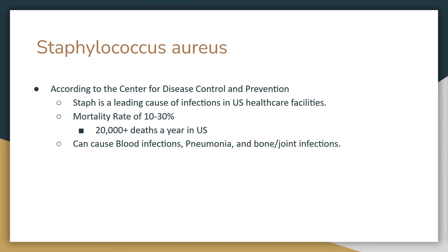Staphylococcus aureus is responsible for everything from bloodstream infections, pneumonia, and bone and joint infections, which collectively lead to an estimated mortality rate between 10 and 30 percent. It is important to realize that infections commonly occur in hospital environments, meaning the population this bacteria most often affects are already some of the most immunocompromised in our society, making prevention via proper sanitation ever the more important.